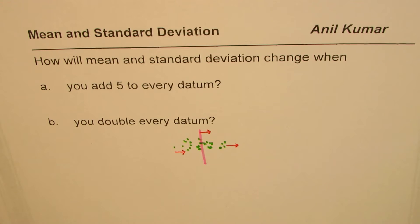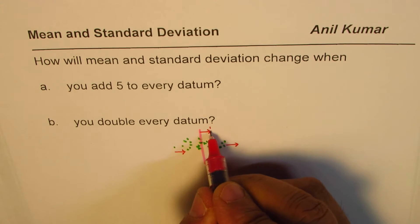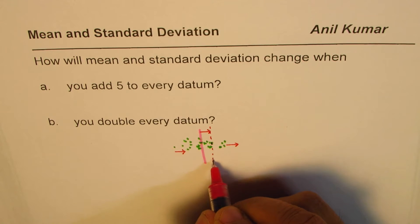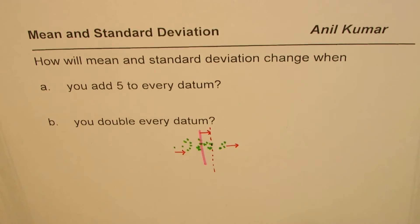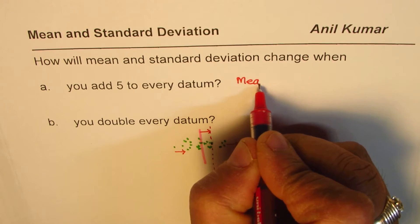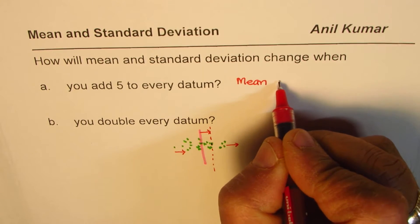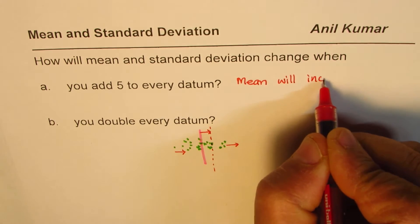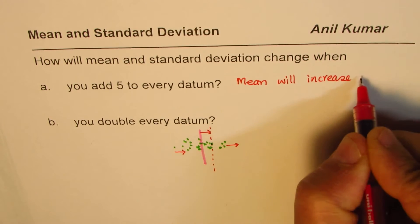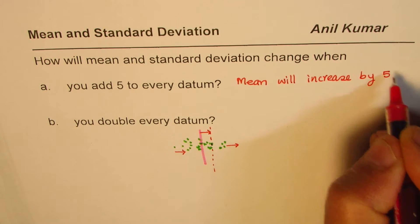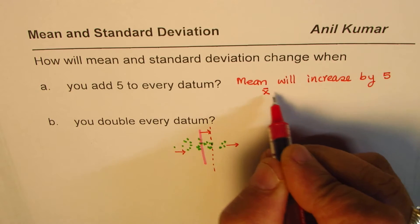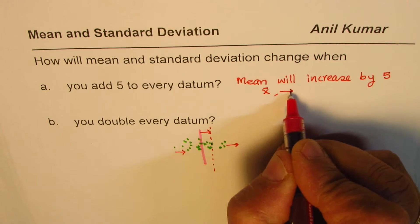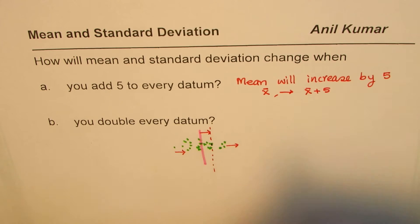In that case, clearly the mean will also shift by 5 units. So if you add 5 to every datum, then mean will increase by 5. If the mean was x̄ (that is how we normally represent it), then it will become x̄ + 5. So that is the change which we will expect in the mean.